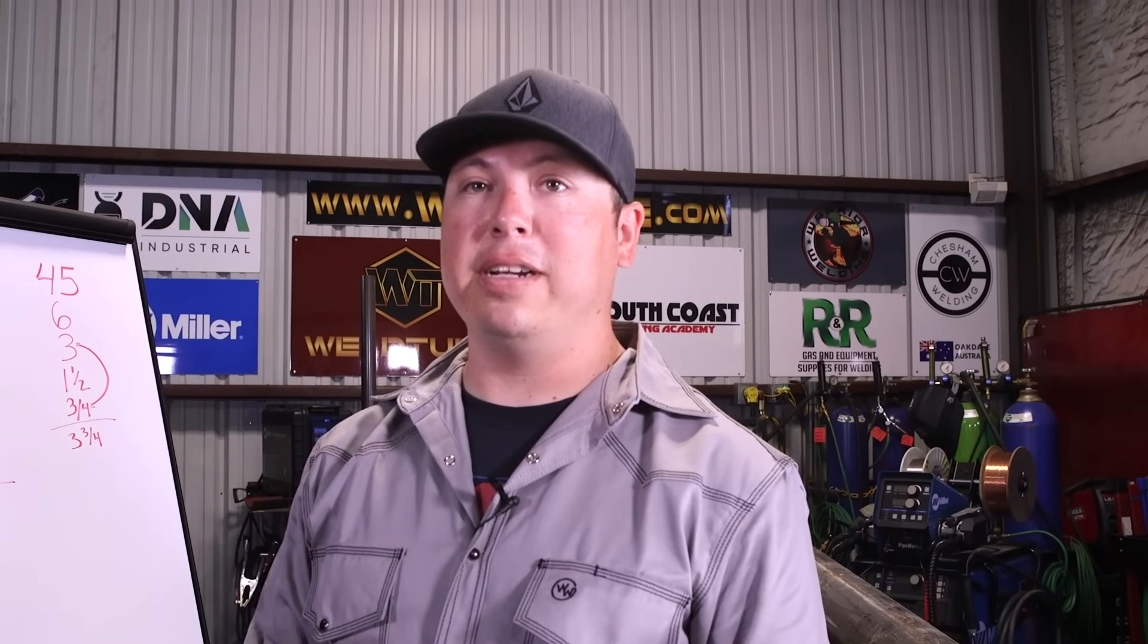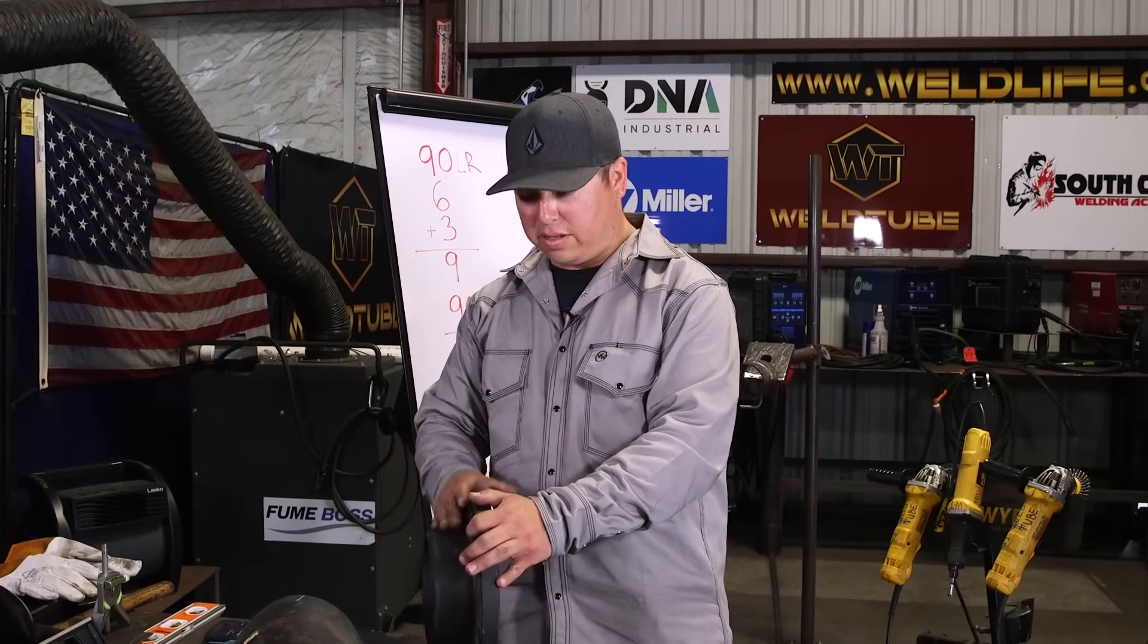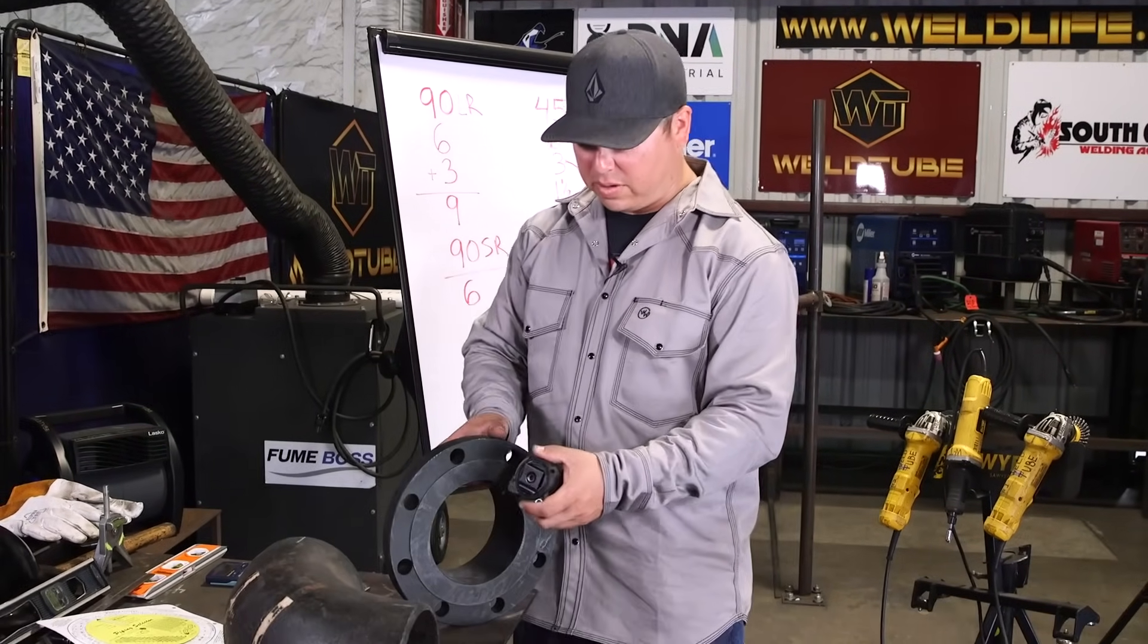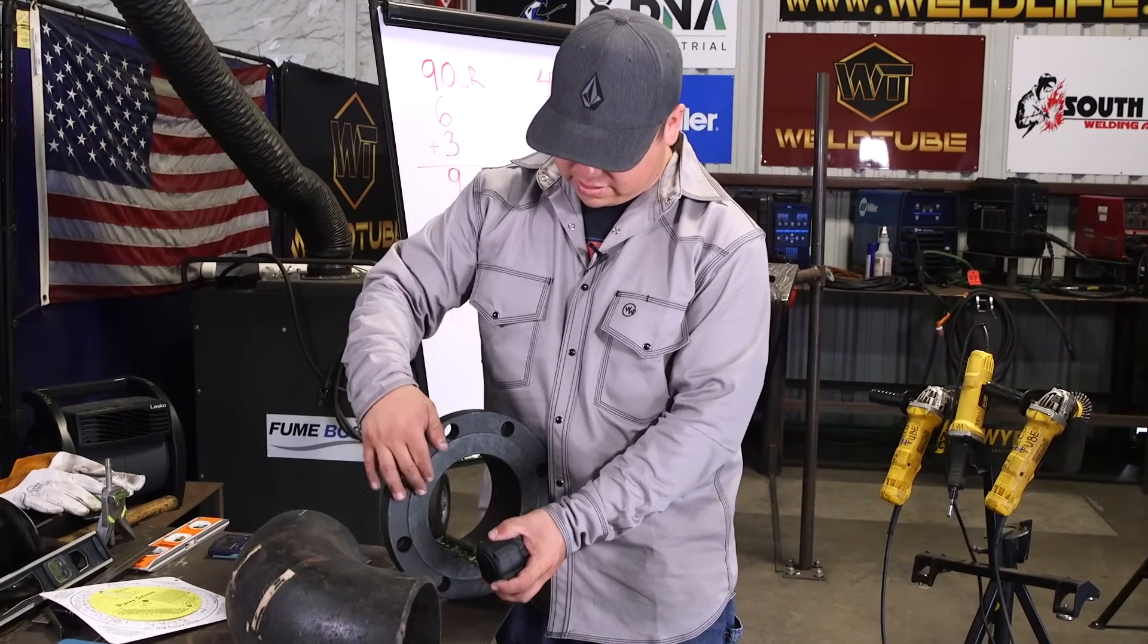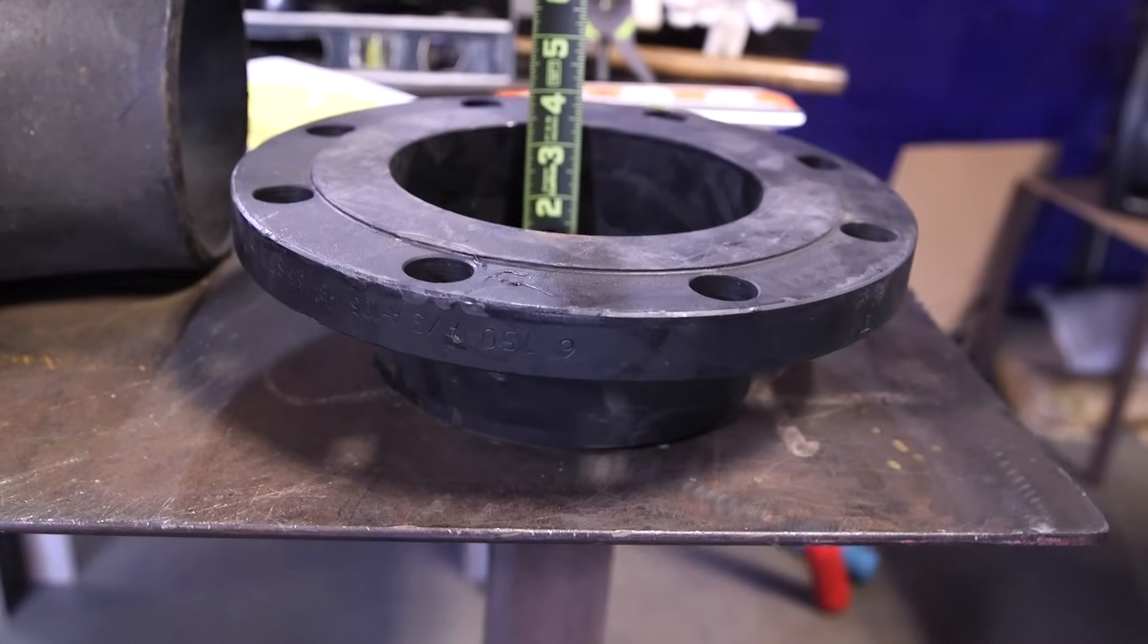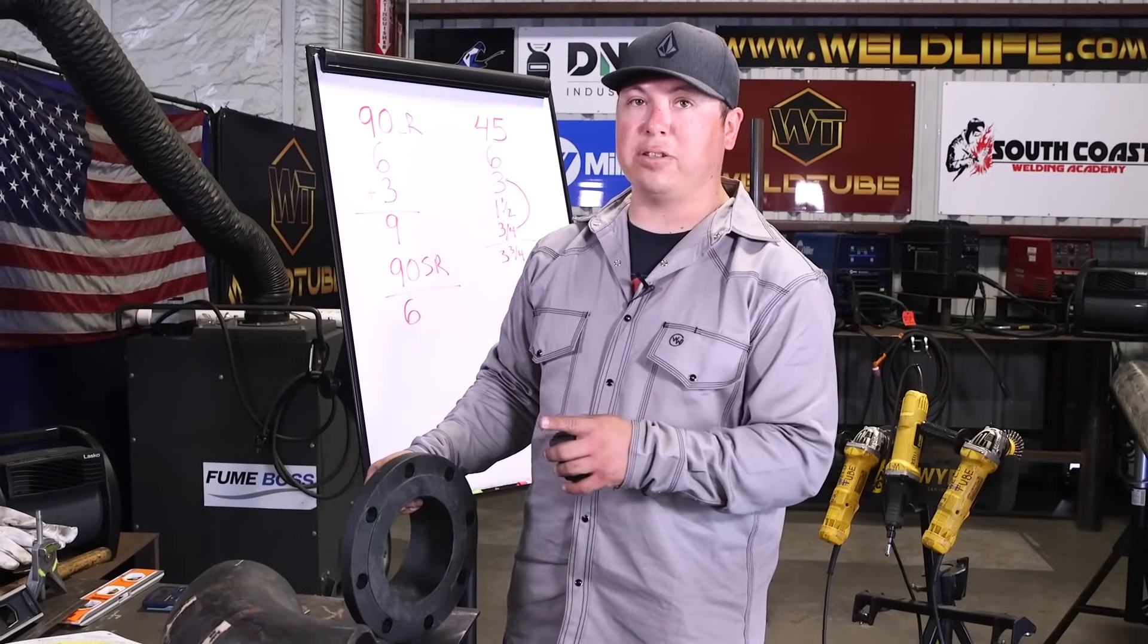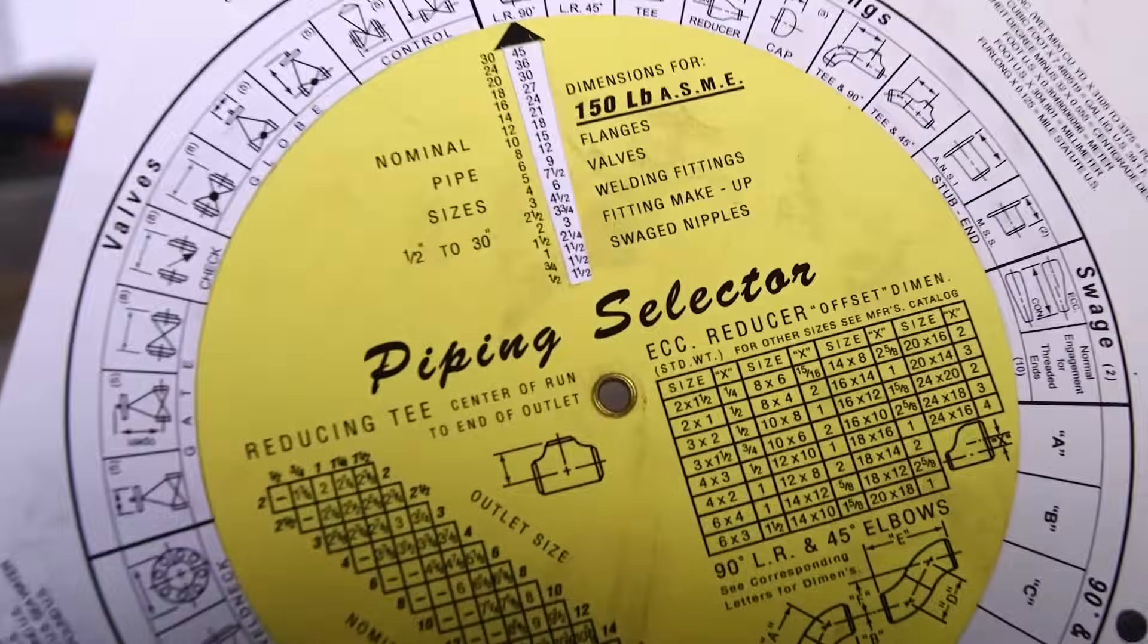Alright guys, so I'll show you guys how to get a takeoff of this flange here. The simplest and easiest thing, if you have access to the fitting already in front of you, you get your tape measure. You actually put it on the inside and measure all the way to the face of your flange here. This particular 6 inch 150 flange is 3.5 inch takeoff for it. This information can also be found on Chico cards, the piping selector wheel and your blue book as well.